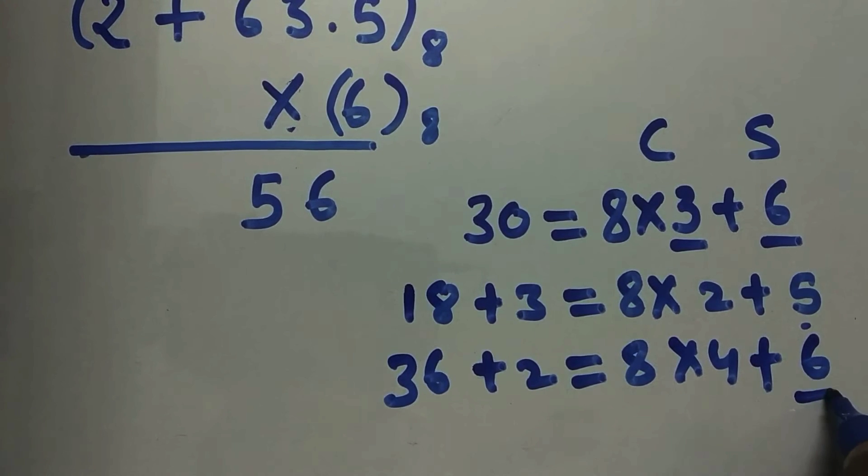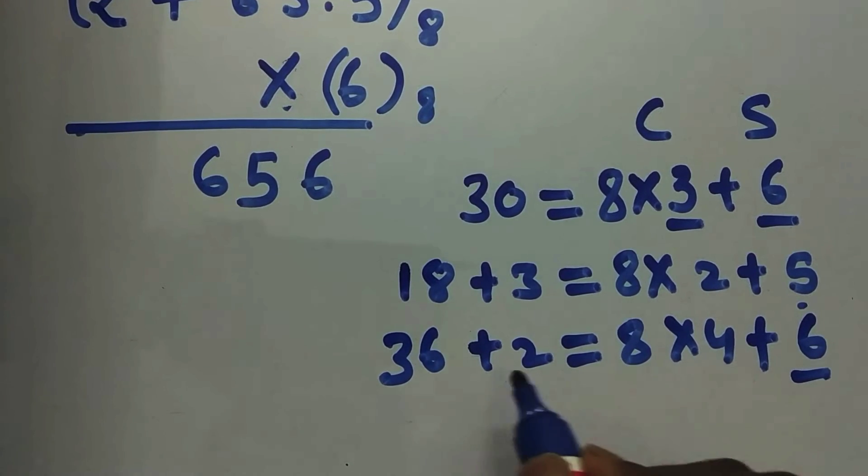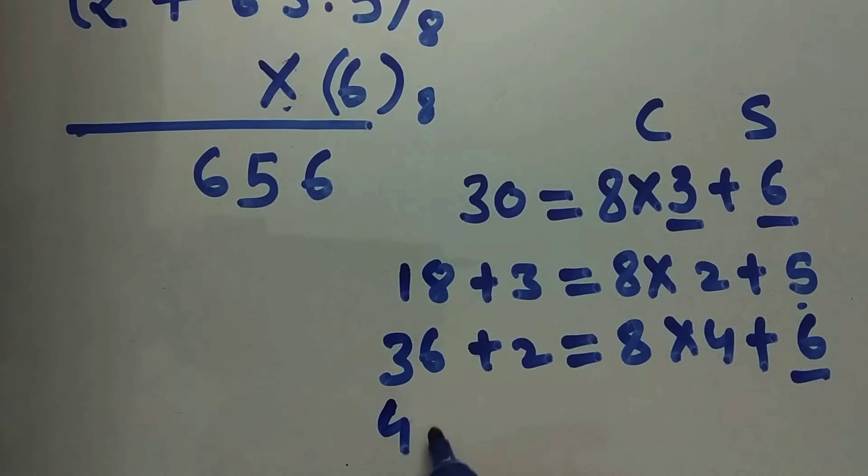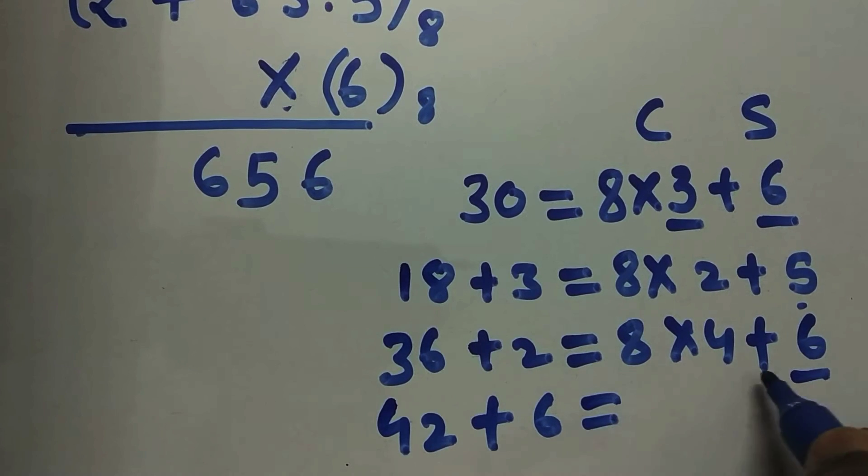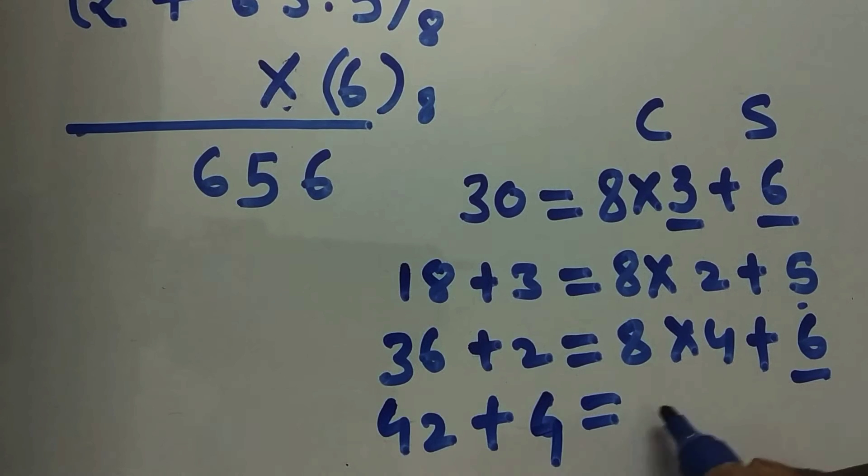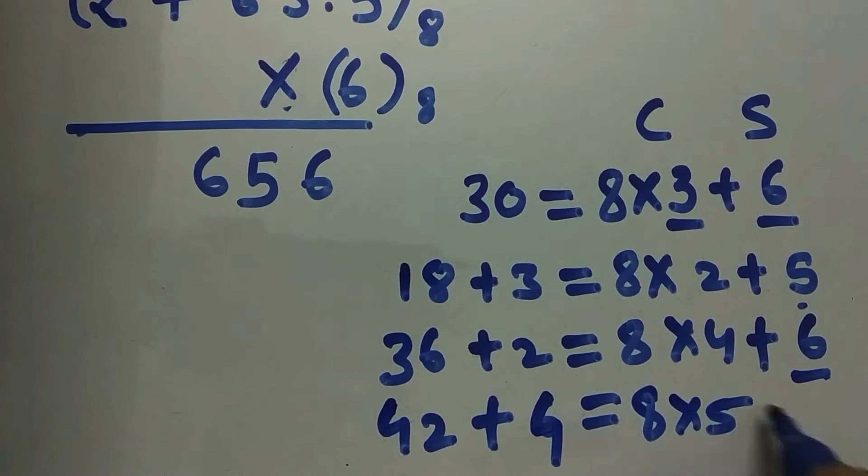Now 6 into 7, that is 42 plus 4. So 42 plus 4, that is 46. So now 8 into 5 plus 6.